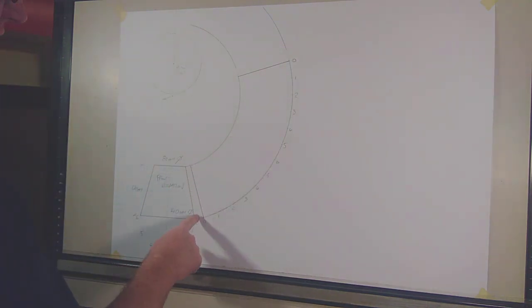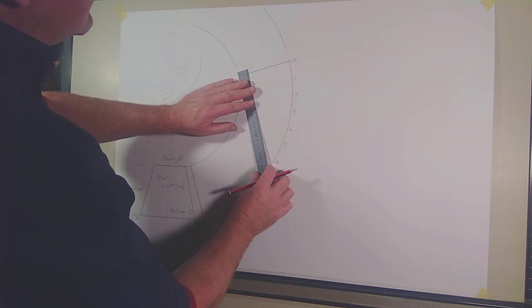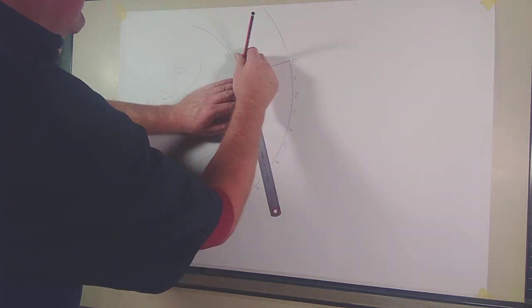So that's the cone layout that would be if you were going to butt weld the two ends together after you'd formed it up and welded it. But if you wanted to put a lap on it and rivet it or maybe spot weld it, you would add a length onto the end here. So what I'll do is I'll just add 10mm here.